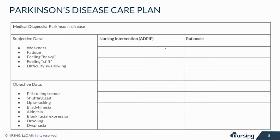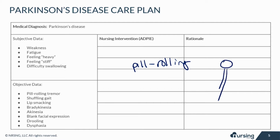For objective data, you might notice a pill-rolling tremor in the hands — it looks like the patient is really rolling pills between their thumb and fingers. The patient with Parkinson's looks pretty stiff, and when you get them up to walk, they shuffle and don't move their feet very much.